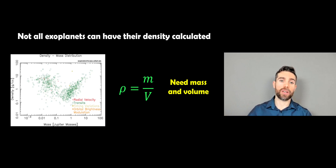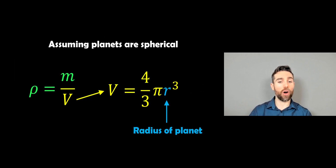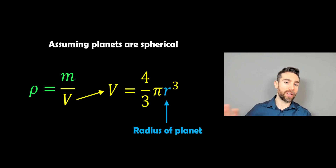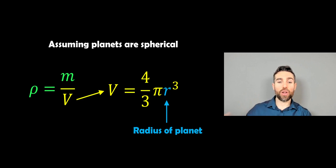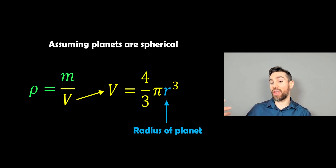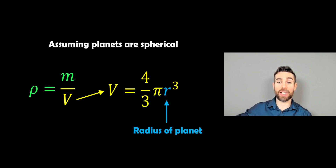If you can get both detection methods at the same time, then you're able to get the density. Starting with volume — we're going to assume that the planets are spherical. They're not absolutely perfect, they're slightly non-spherical, but we make that assumption because it gives us a good approximation. The volume for a sphere is 4/3 × π × r³. The thing we can actually measure is the radius of the planet, so that's what we need to find from our observations first.